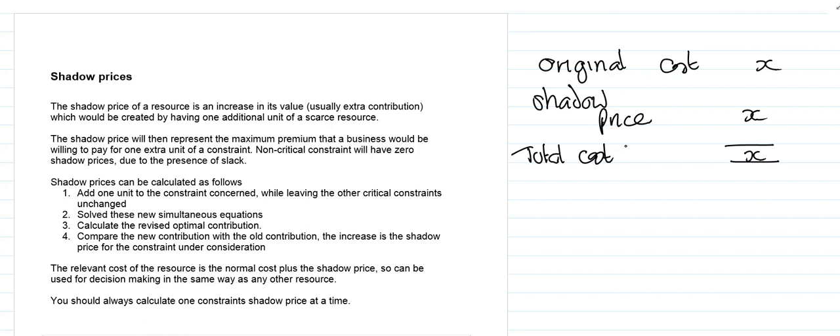You add one unit to the constraint concerned, leaving everything else as it was. You now have two equations: one that's been changed by one unit and the other that's exactly the same as it was for the optimal solution in a linear programming problem. You then solve these new simultaneous equations.